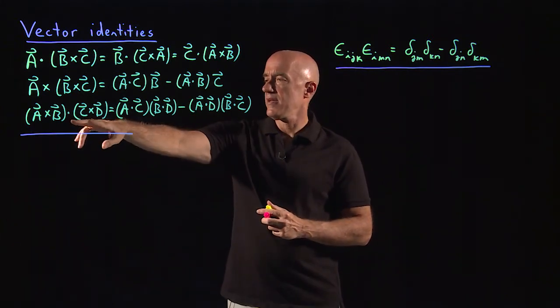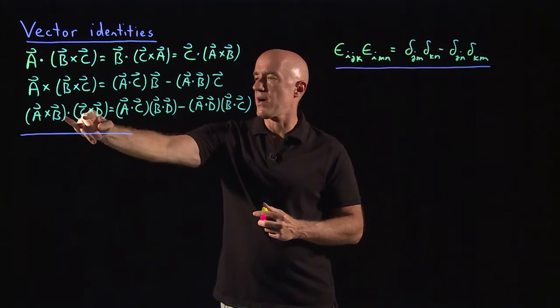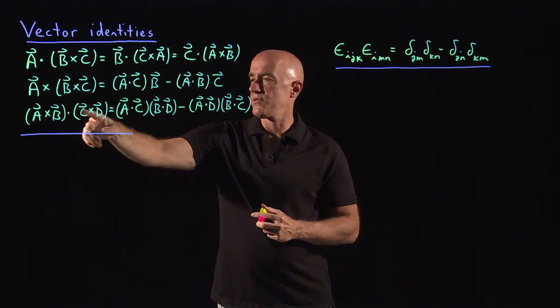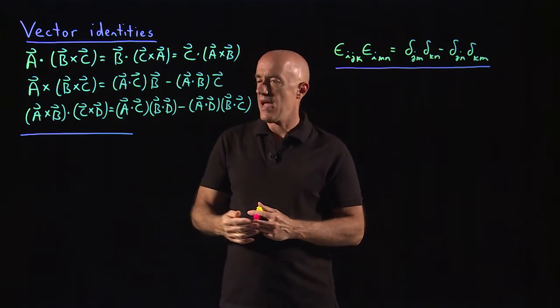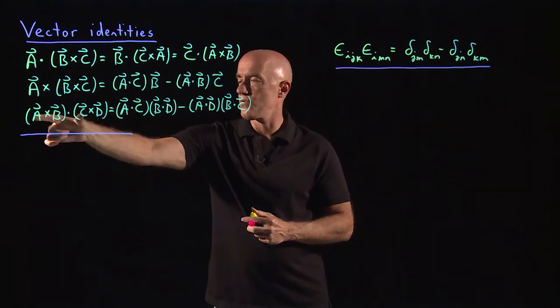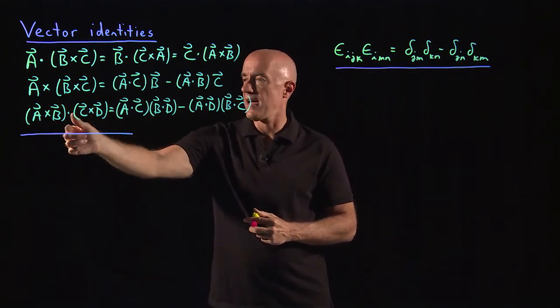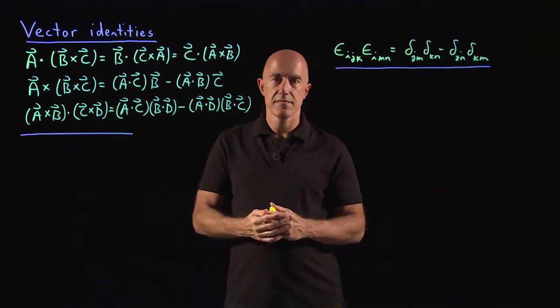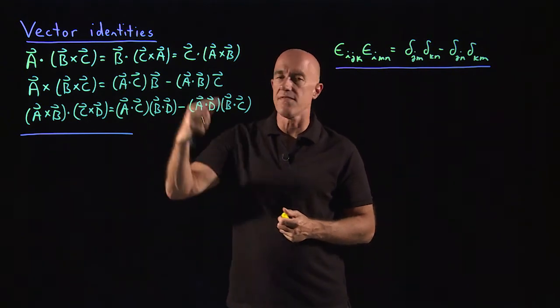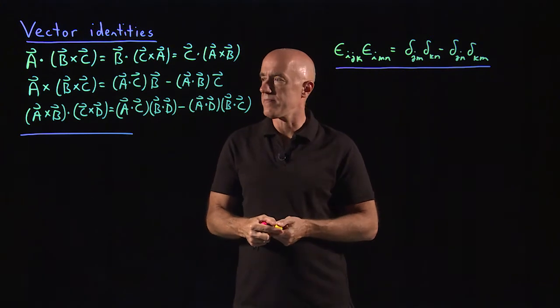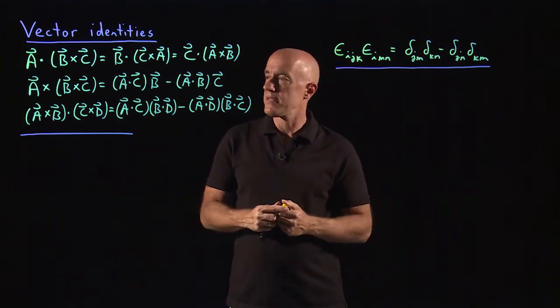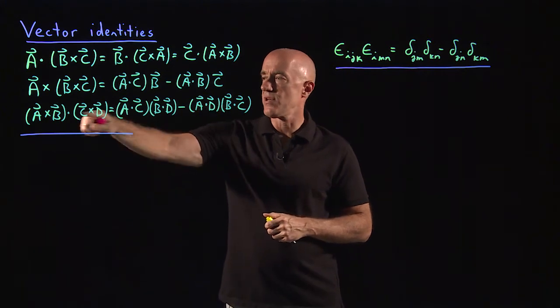The third identity is what do you get when you have two cross products and then you take the dot product between them. So (A×B)·(C×D). So that's a scalar. And that can be written without any cross products as (A·C)(B·D). So this order first. And then minus (A·D)(B·C). Like I said, you don't memorize these, but they all have a very nice symmetry associated with them. So in my notes, I prove all of them. On the light board, it's a little bit too messy to do all of them. So let me just do the third one.